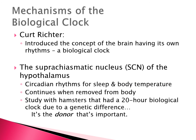Kurt Richter introduced the concept of the brain having its own biological rhythm, and we have discovered this occurs in the suprachiasmatic nucleus of the hypothalamus. The SCN is a great mouthful of nomenclature: supra means on top of, chiasmatic means on top of the optic chiasm. Retinal ganglion cells in our eyes send information about relative light levels to this area of the hypothalamus, helping to control and reset our circadian rhythms for sleep, body temperature, and everything else.